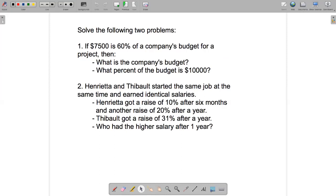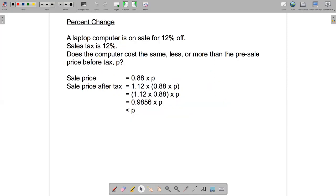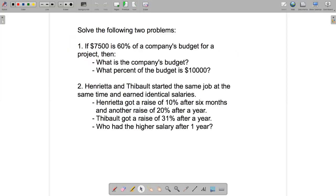And then question two. Henrietta and Thibault started the same job at the same time and earned identical salaries. Henrietta got a raise of 10% after six months and another raise of 20% after a year. Thibault, on the other hand, got a raise of 31% after a year. The question is, who had the higher salary after one year? So this problem is similar to this one, the percentage change problem. So think about how you would solve the salary problem using the same ideas from the percentage change problem.